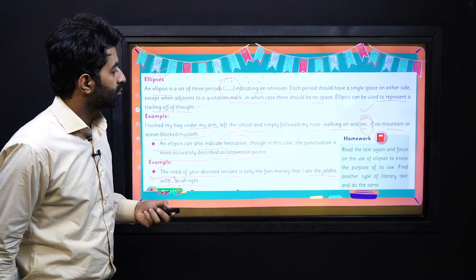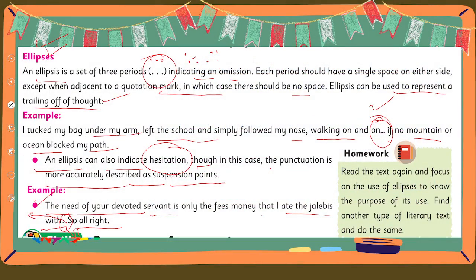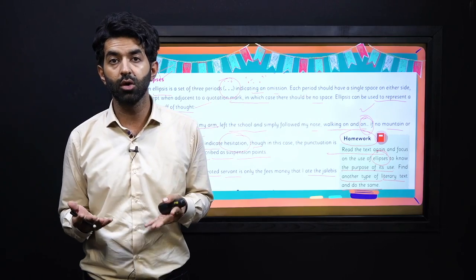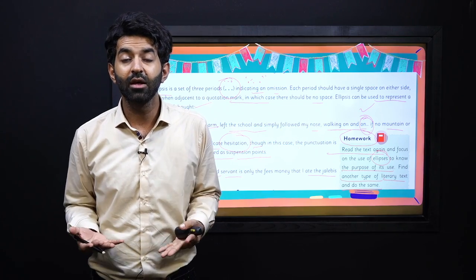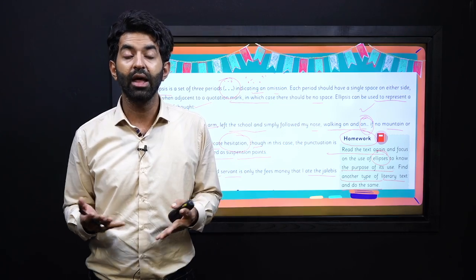As homework, you have to read the text of Jalebis again and focus on the use of ellipsis. Mark where the ellipsis is used and note its purpose — was it used to show trailing off of thought, hesitation, or some other purpose? Also find another type of literary text and do the same. You can also find other punctuation cues like exclamation marks or quotations and explain why they are used, just as you will explain ellipsis.